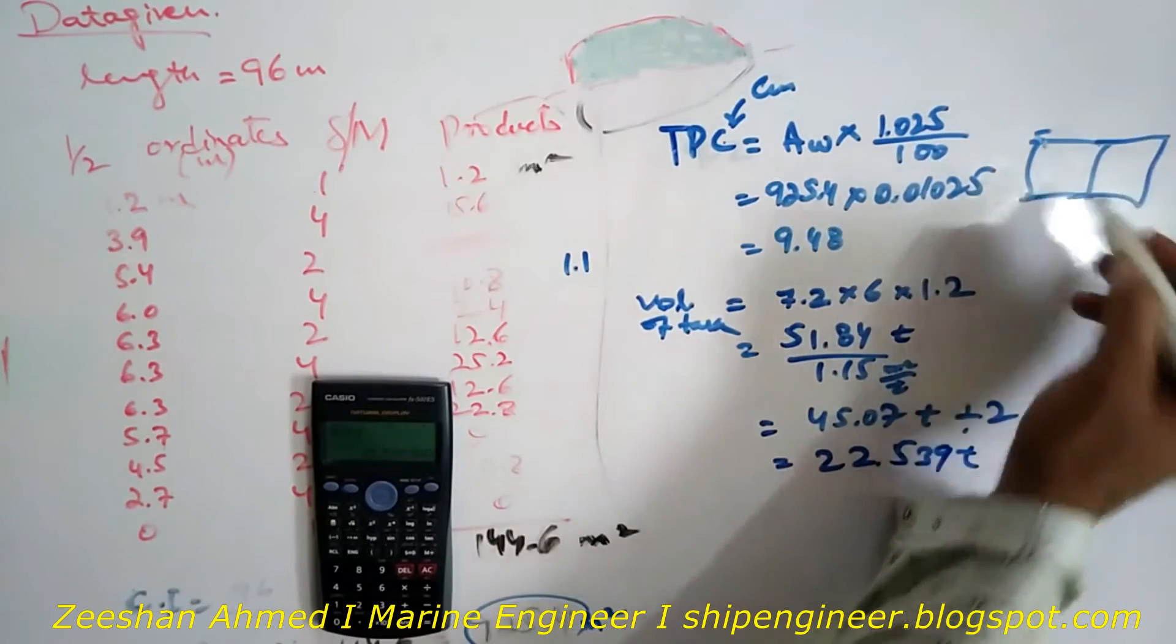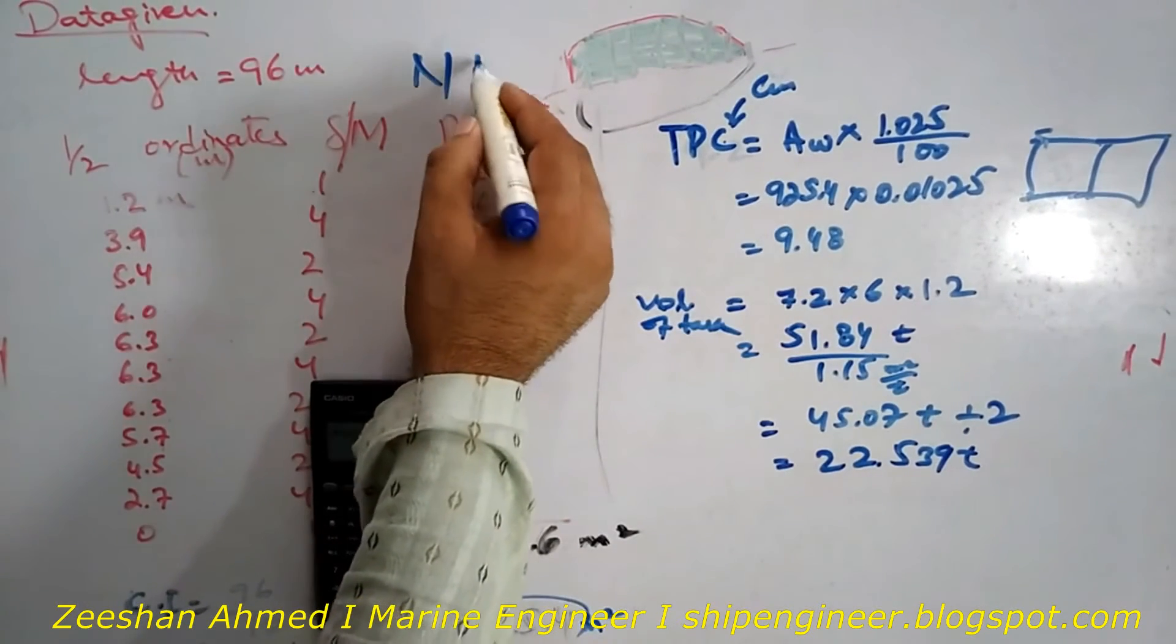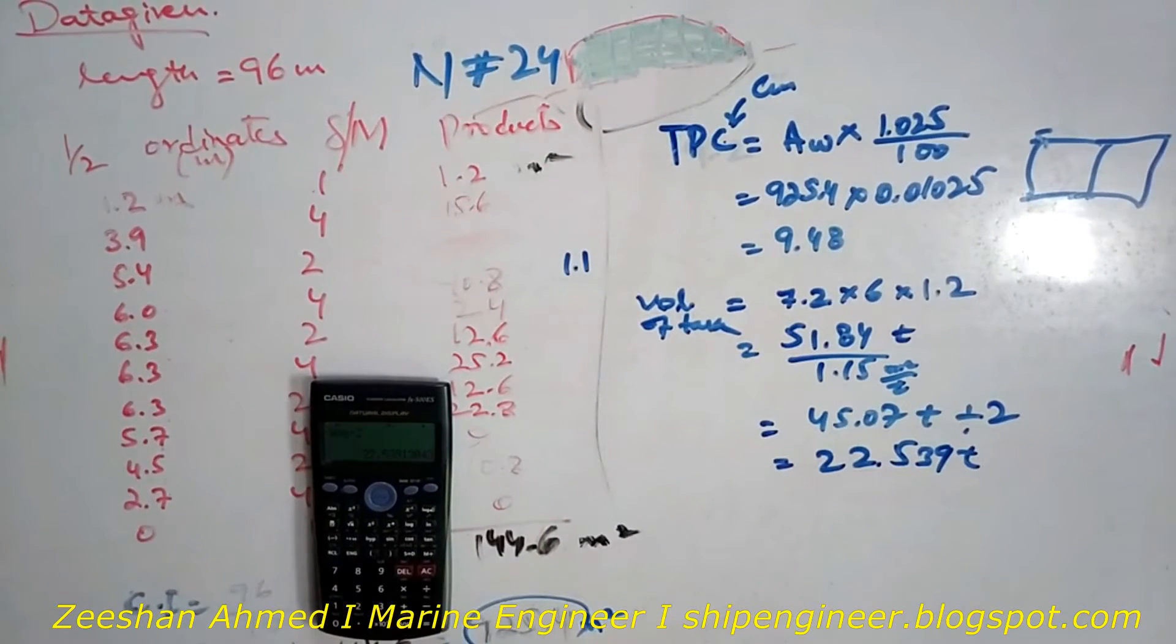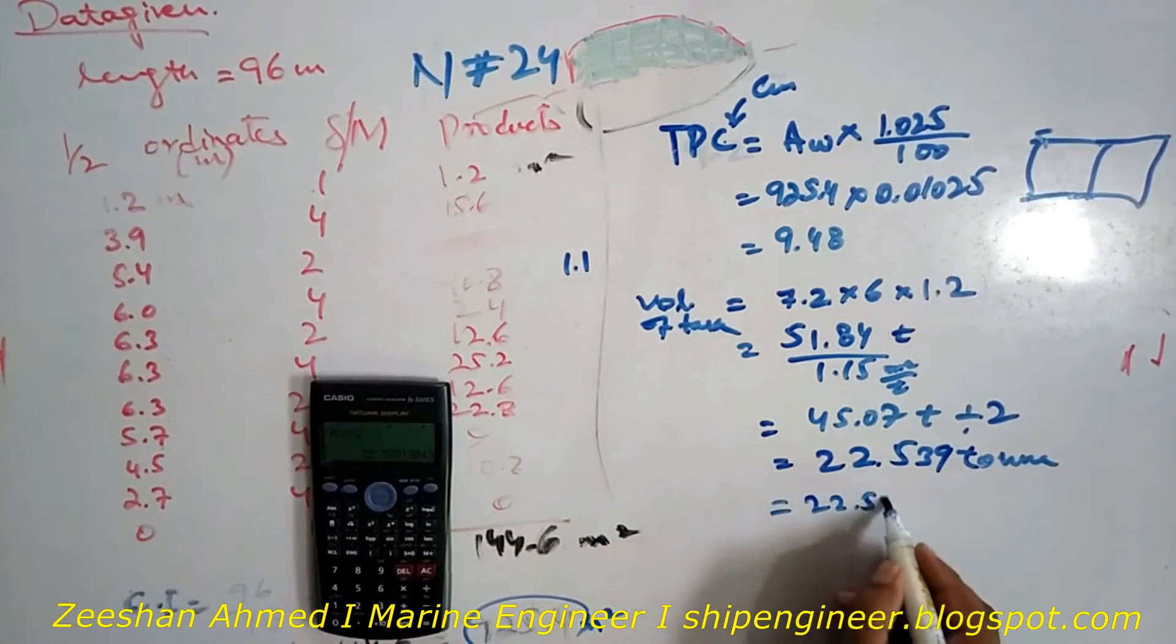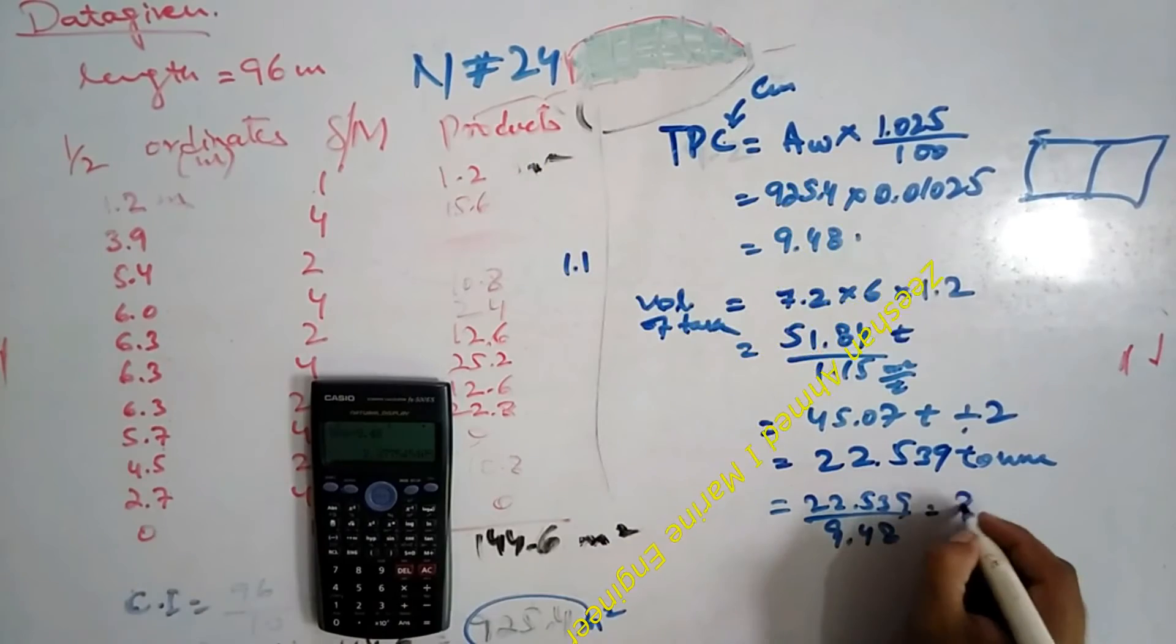This is numerical number 24. I will write here again because it's not showing in the mobile. I'm doing numerical number 24. Up till now I have reached 22.539 tons. After this, I have to calculate the draft. For the draft, I have to divide this with the TPC. I have found here 9.48. 22.539 divided by 9.48 gives us 2.37. Because it's tons per centimeter and it's tons, tons cancel, and it gives me a value in centimeters. This is the reduction in draft.